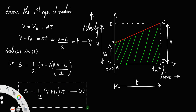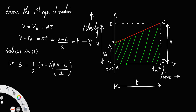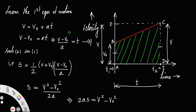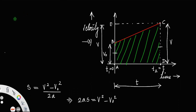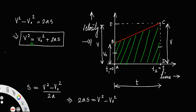Simplifying, using the identity (a + b)(a − b) = a² − b², we get s equals (v² − v₀²) divided by 2a. Taking 2a to the left gives 2as equals v² minus v₀², or v² equals v₀² plus 2as, where a is the acceleration, v is the final velocity, and s is the displacement. This is the third kinematic equation of motion.